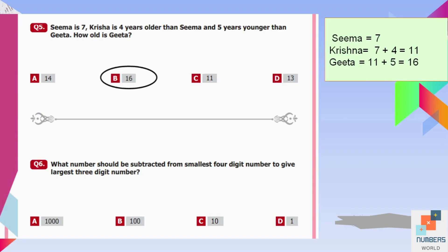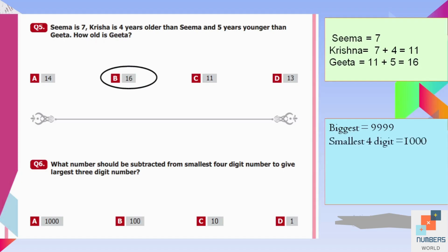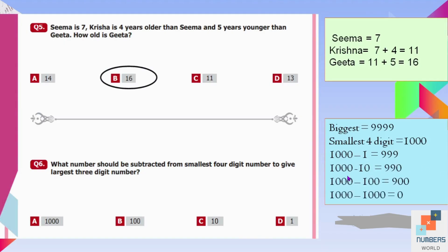Question number six: What number should be subtracted from the smallest four-digit number to give the largest three-digit number? The smallest four-digit number is 1000 and the largest three-digit number is 999. Checking the options, 1000 minus 1 equals 999, which is the greatest among all answers. So option D is correct.